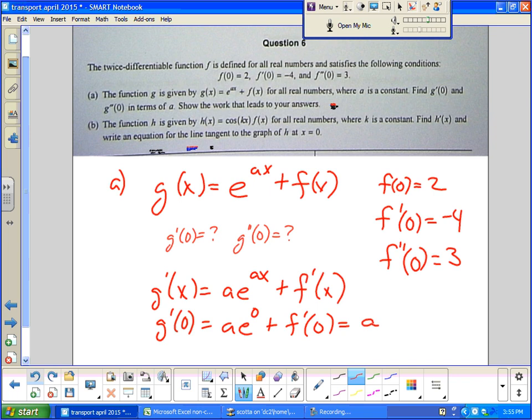Which is just one times a which is a. f of zero is two. So, oh no, f prime. f prime is negative four. So the answer is a minus four. Alright.